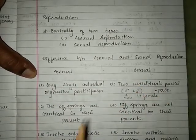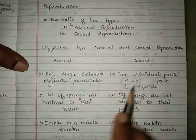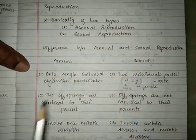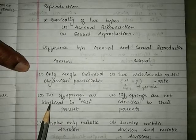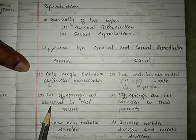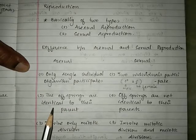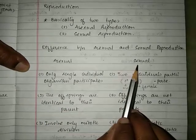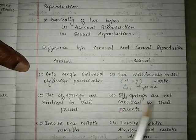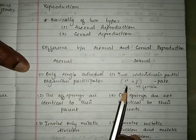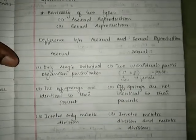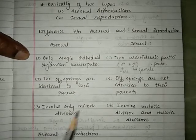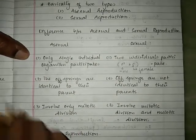In sexual reproduction, organisms can be differentiated into male and female, and two individuals participate. In asexual reproduction, the offspring produced are identical to the parent — morphologically and genetically the same — because they come from a single individual. In sexual reproduction, the offspring are not identical to the parents because they are a mixture of two different individuals. Asexual reproduction involves only one type of cell division called mitotic division.